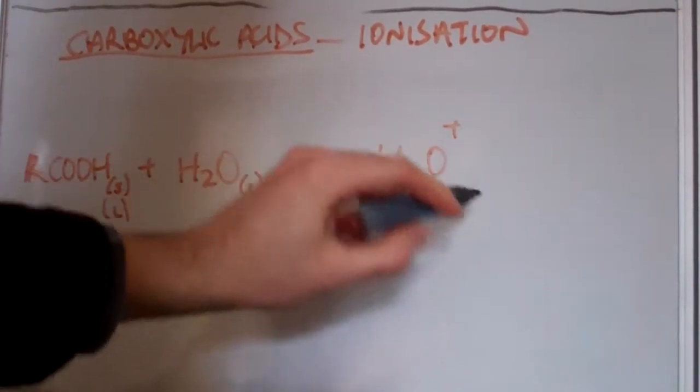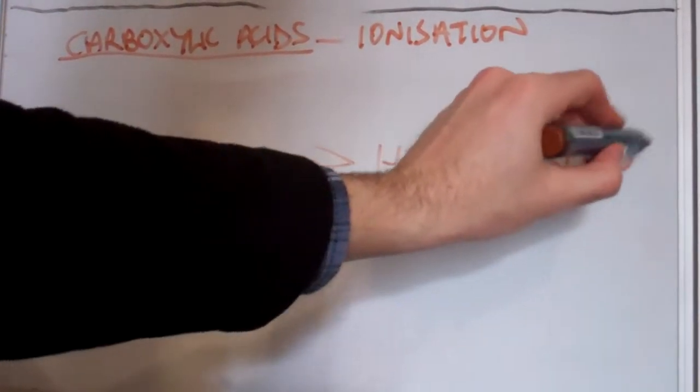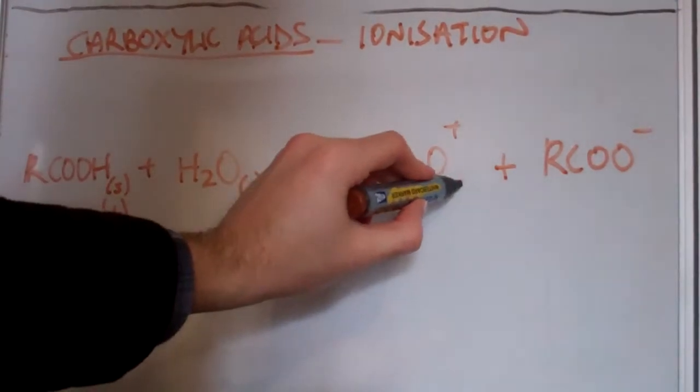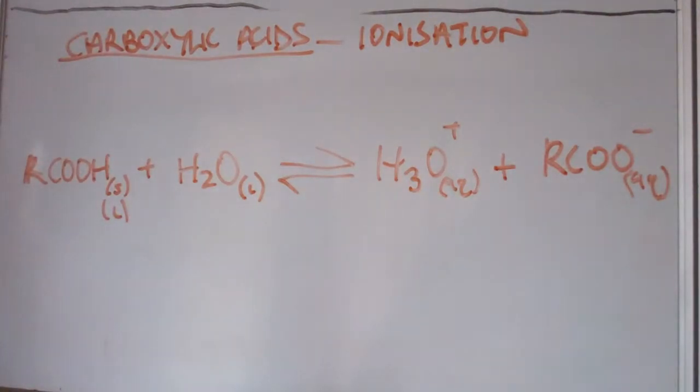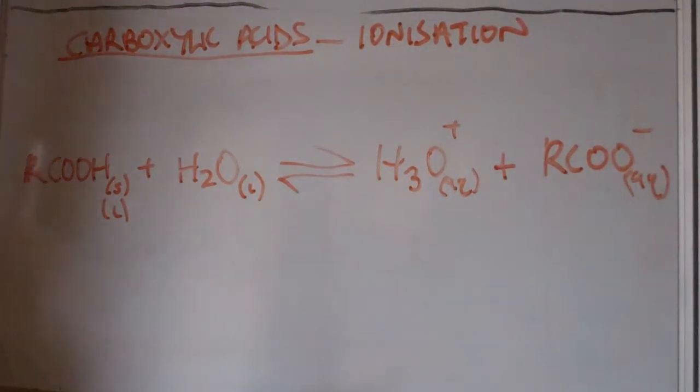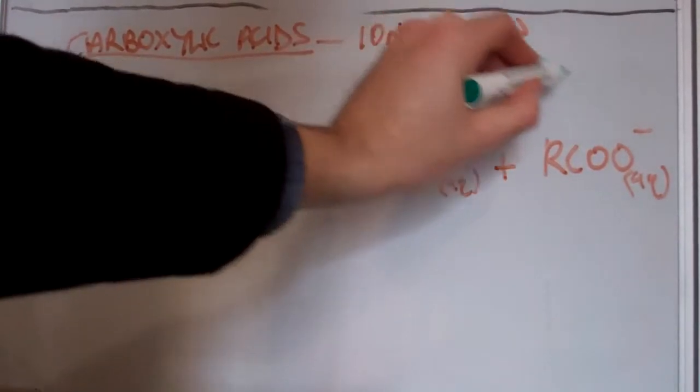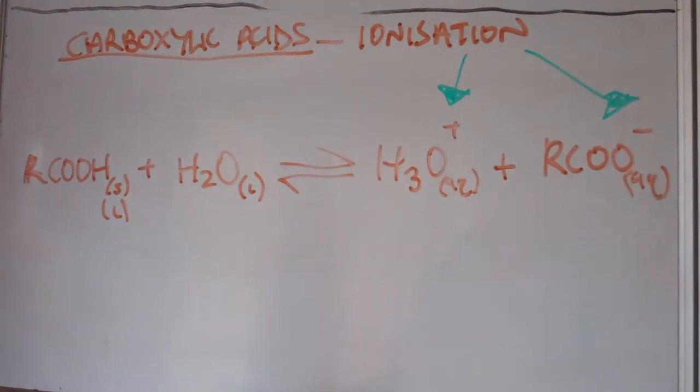We get some hydronium ions, H3O+, and we get RCOO-, carboxylate ion. These are aqueous. So this is ionization in water because our reactants are reacting to form ionic products: positive hydronium ions and negative carboxylate ions. This is a pretty straightforward reaction.